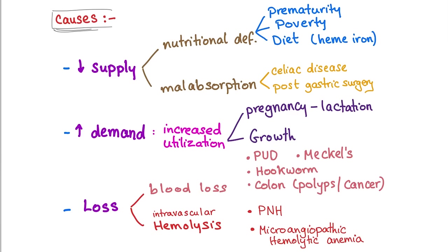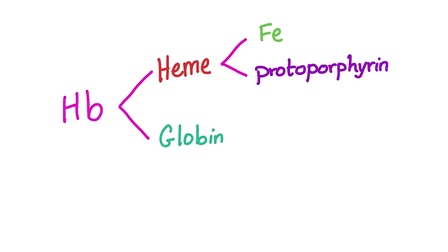Loss includes blood loss or intravascular hemolysis. Blood loss causes: peptic ulcer disease and Meckel's diverticulum — peptic ulcers usually in adults, Meckel's in kids because it has some gastric tissue that can bleed. Also hookworm infection — Ancylostoma duodenale or Necator americanus — colon polyps, and colon cancer. Intravascular hemolysis, such as microangiopathic hemolytic anemia and paroxysmal nocturnal hemoglobinuria, causes iron loss through the kidneys.